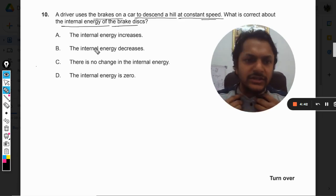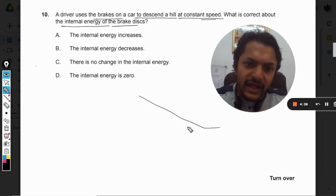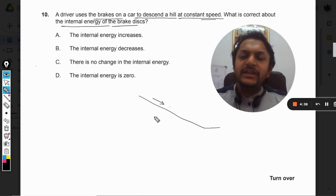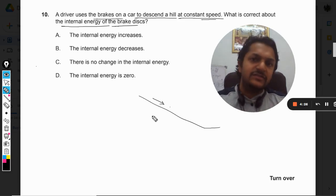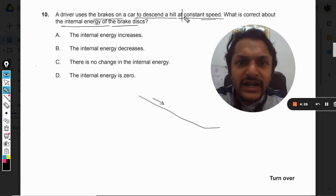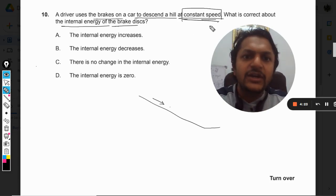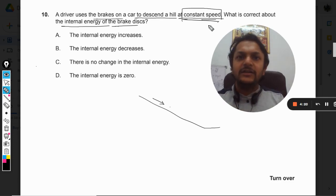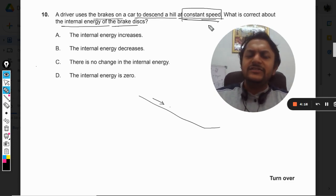So what is happening now? Because there is a hill and this vehicle is trying to go down, obviously there will be an acceleration and the velocity has to increase. If the velocity is increasing, the kinetic energy will increase. But now the condition is that it is moving at a constant speed, so we are not letting kinetic energy increase.